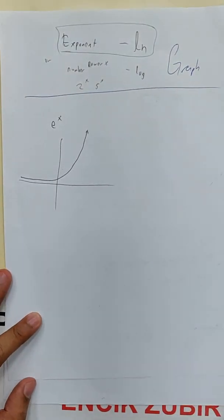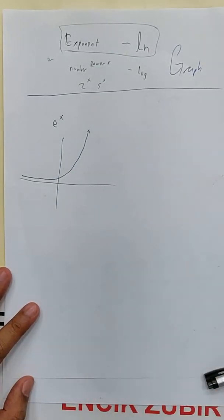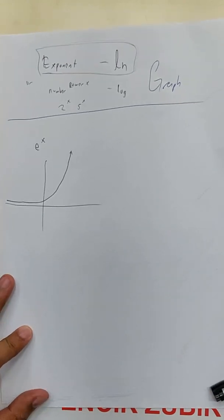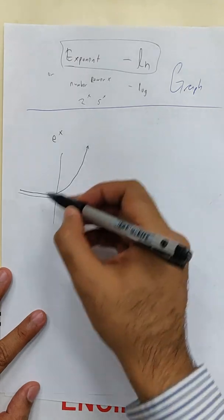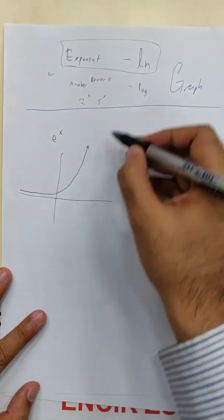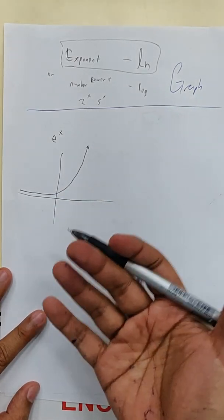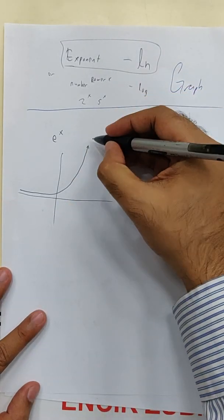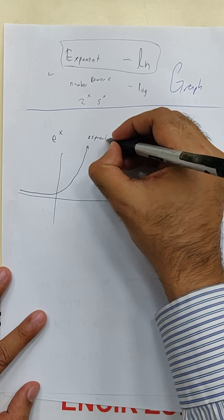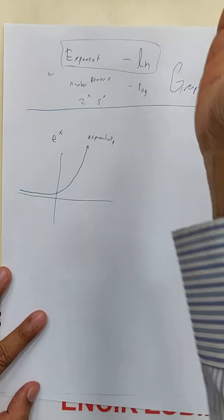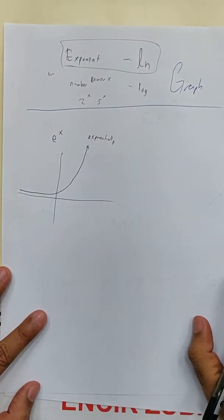The graph rises exponentially — 'exponentially' becomes an adjective there. In Malay, we say it rises secara mendadak. We call it 'rise up exponentially', meaning it suddenly rises very, very high. You can even write it in your English essay: 'it becomes exponentially difficult.'